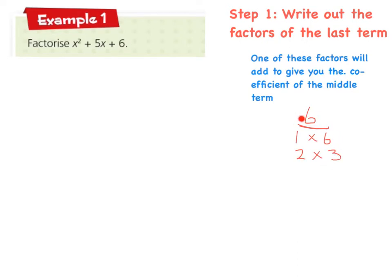Now, once I've written out these factors, I must have a look, as one of these factors will add to give you the coefficient of the middle term. And remember, coefficient is that number before the x in the middle term, so it's 5. So which one of these, when I use the factors in some way, can give me 5? Well, straight away I can see 2 plus 3. If I added those two factors together, that would give me 5. So I'm going to put a circle around that, and that's what I'm going to use. So I'm going to use the factors 2 and 3.